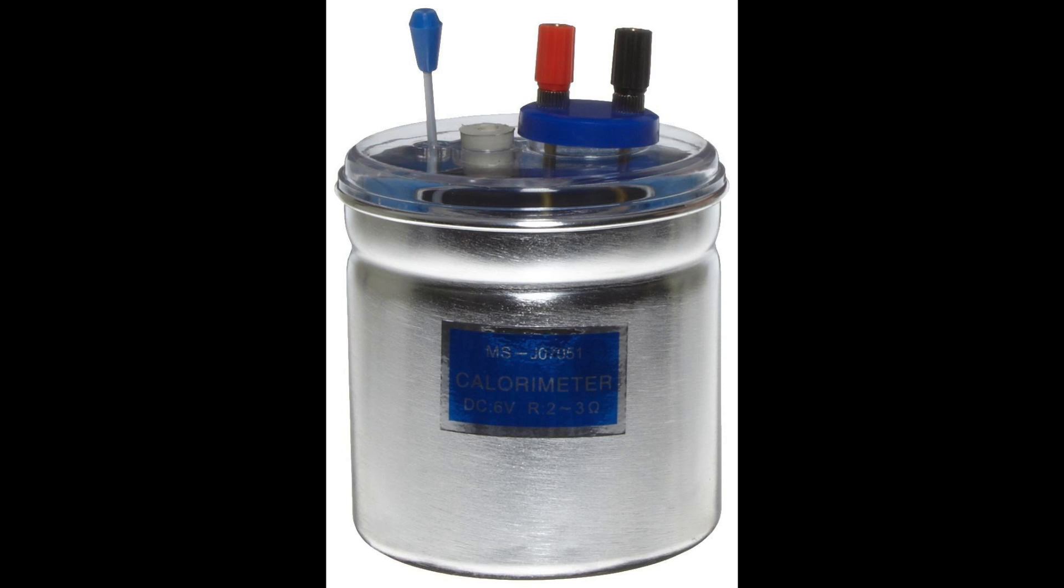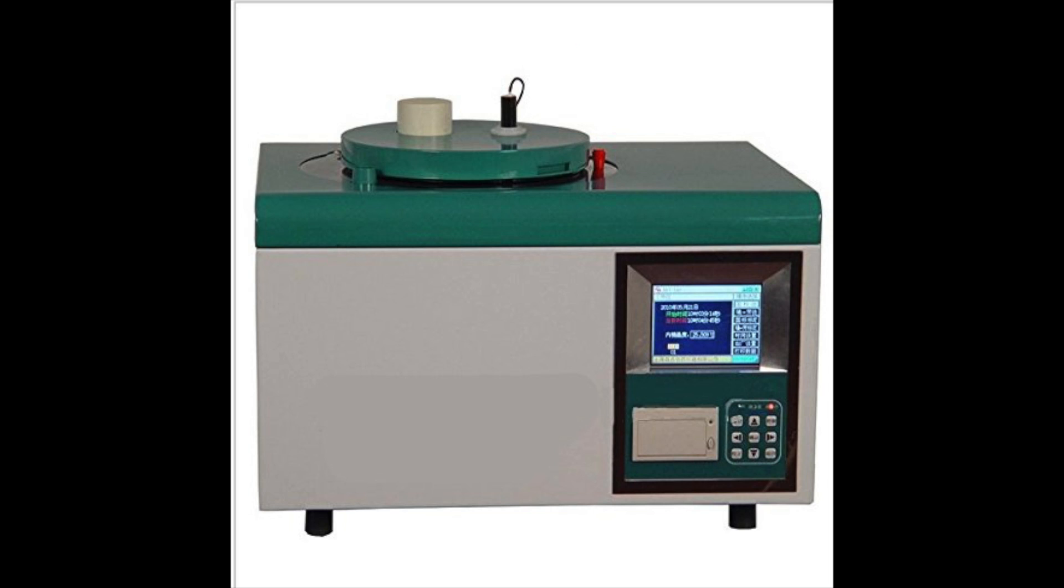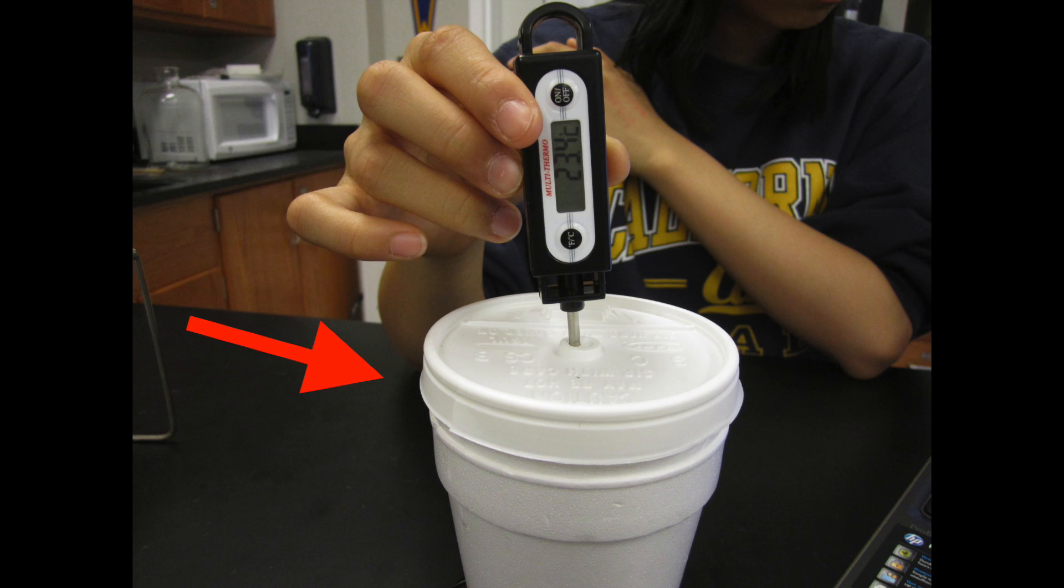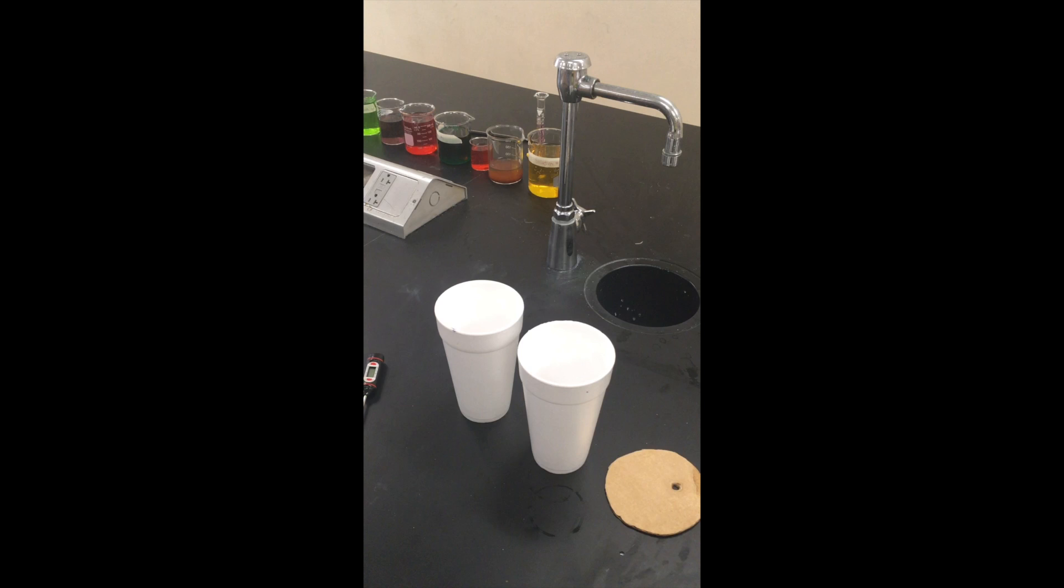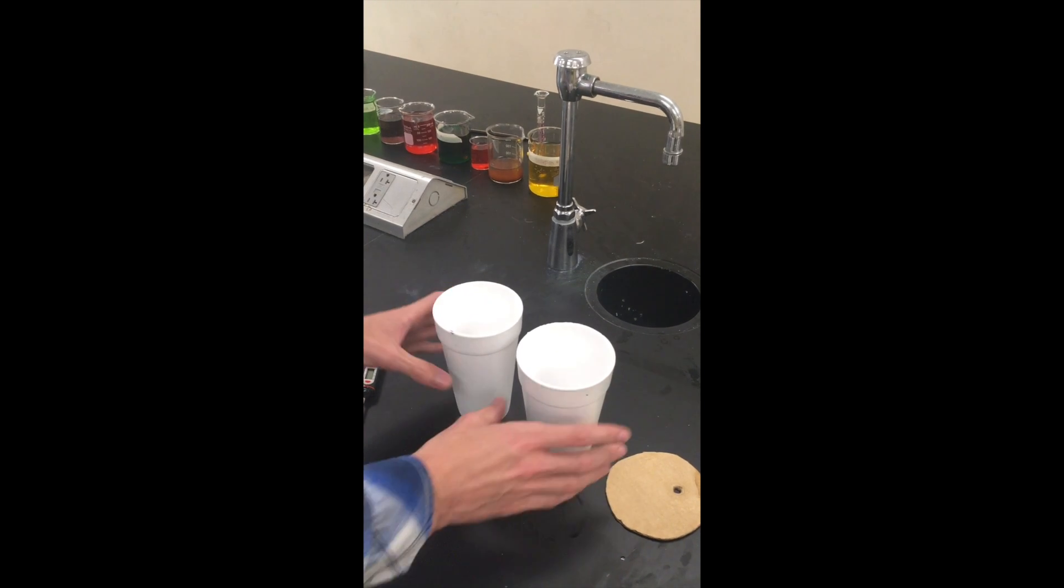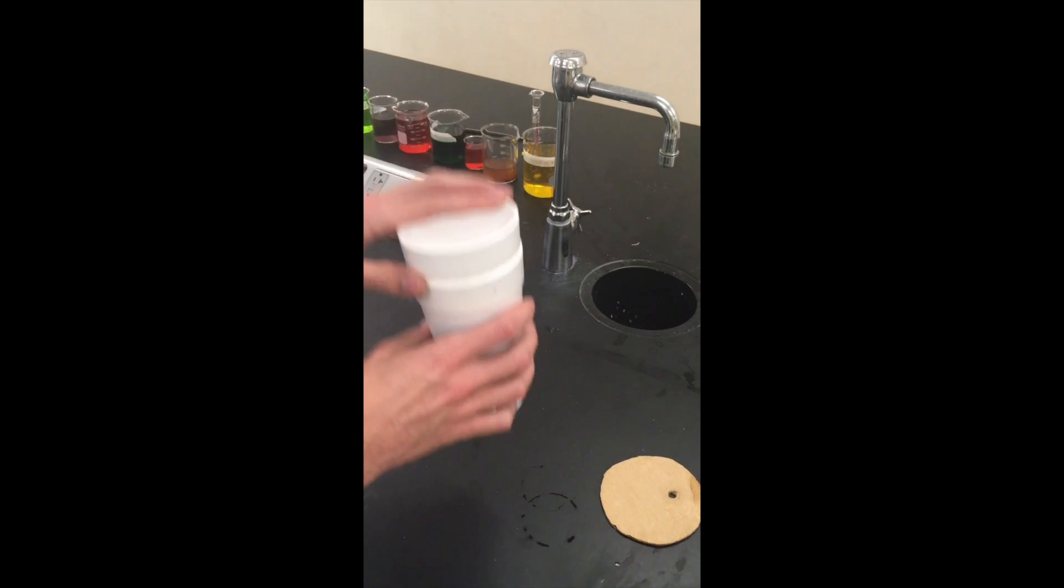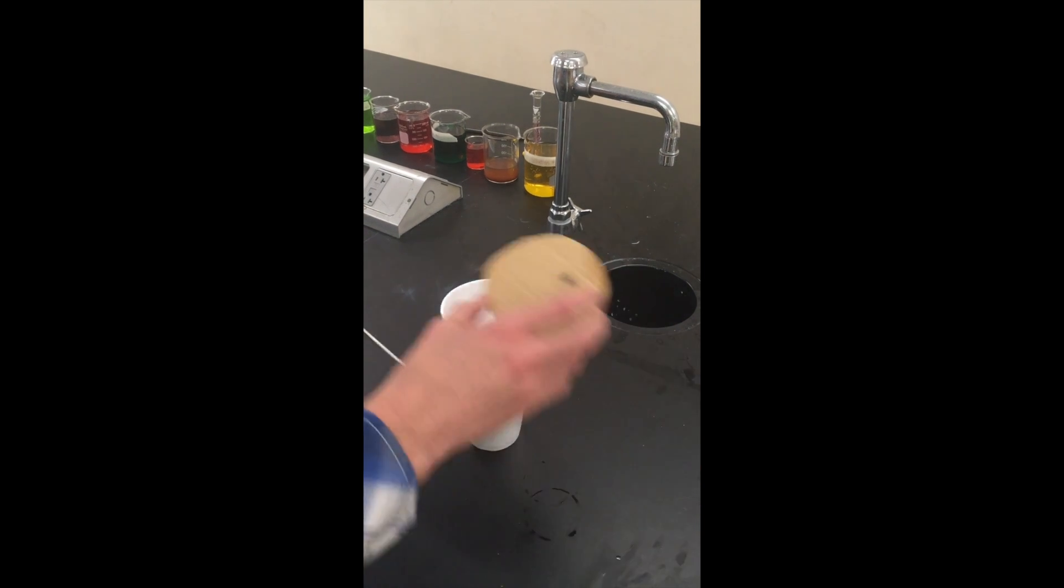A calorimeter can cost anywhere from $15 to a few thousand dollars, depending on the type, but you can make your own general calorimeter using household items for less than a dollar. A reasonably accurate calorimeter can be made by nesting two styrene reaction vessels, also known as styrofoam cups, together, and closing off the top with some sort of cover, like what you see here.